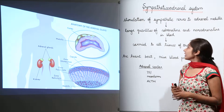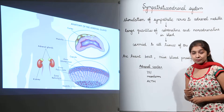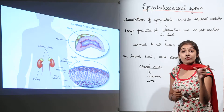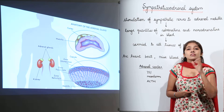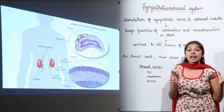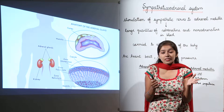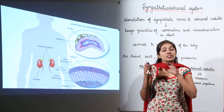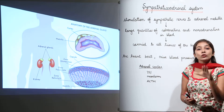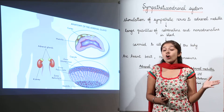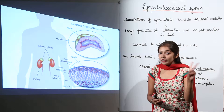There is stimulation of sympathetic nerves to the adrenal medulla. The role of the sympathetic nervous system is the control of involuntary actions — for example, the muscle of your heart is going to be controlled by it. The sympathetic nervous system stimulates the adrenal medulla to release its two hormones: adrenaline and noradrenaline.